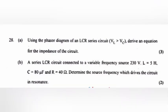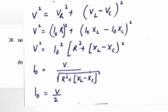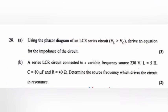Question 28a: Using the phasor diagram of an LCR series circuit, derive an equation for the impedance of the circuit. Answer: V² = V_R² + (V_L − V_C)². Replacing V with I₀, the final answer is Z = √(R² + (X_L − X_C)²).